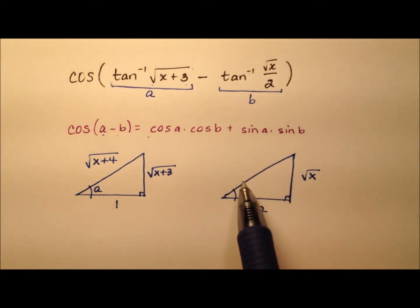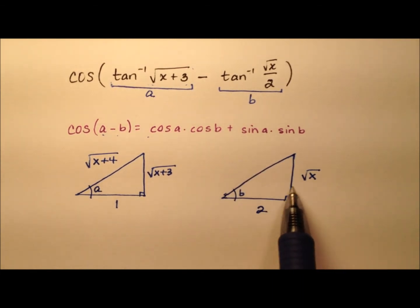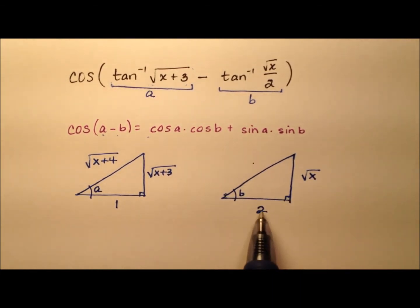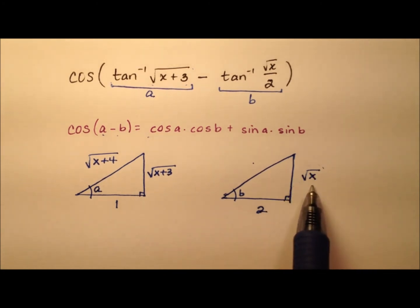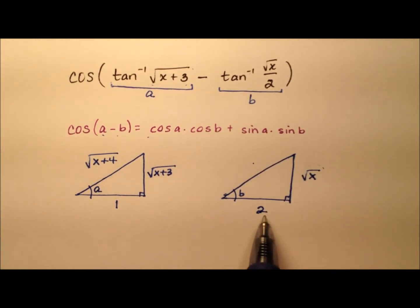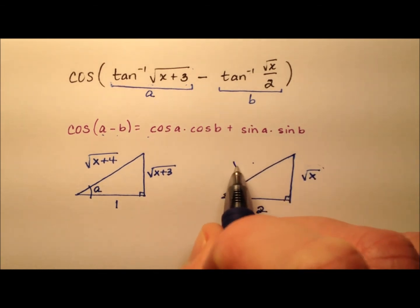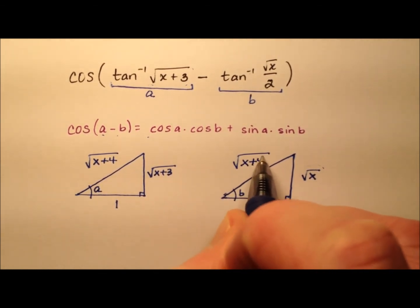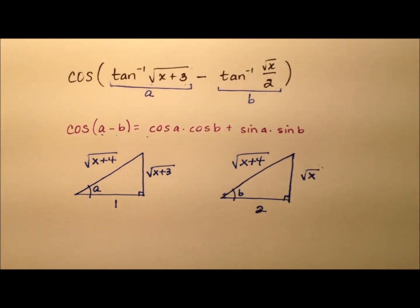And we can find the length of this hypotenuse by A squared plus B squared equals C squared. So 2 squared is 4, and the square of the square root of x is just x, so 4 plus x. And it'll be the square root of x plus 4. So you'll notice something good is that both of these hypotenuses actually are the same length. They're just these triangles are oriented a little differently, so A and B aren't exactly the same.